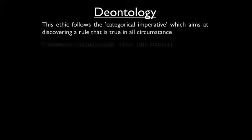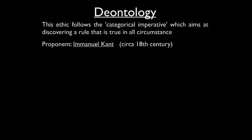Deontology. This is Immanuel Kant — for Kant, everything was the will. This ethic follows the categorical imperative, which means you discover a rule that is true always. A categorical imperative is a universal command. Kant's categorical imperative was: I cannot will something unless I can will it universally. Can I lie? No — because if I lie, I have to say everybody can lie, which would distort truth across society and leave us no basis for communication. So it becomes a duty: you cannot lie.